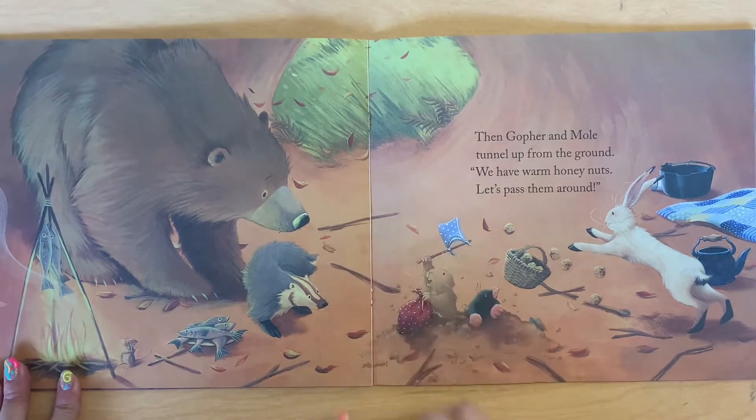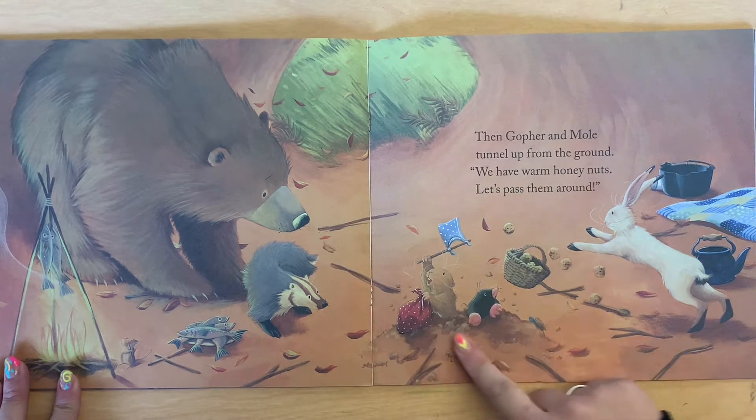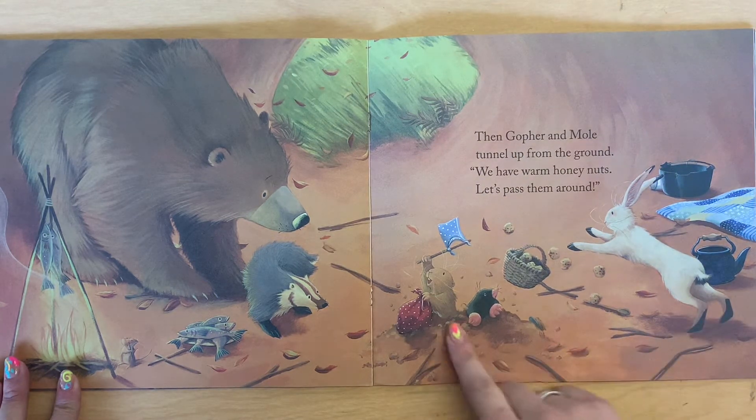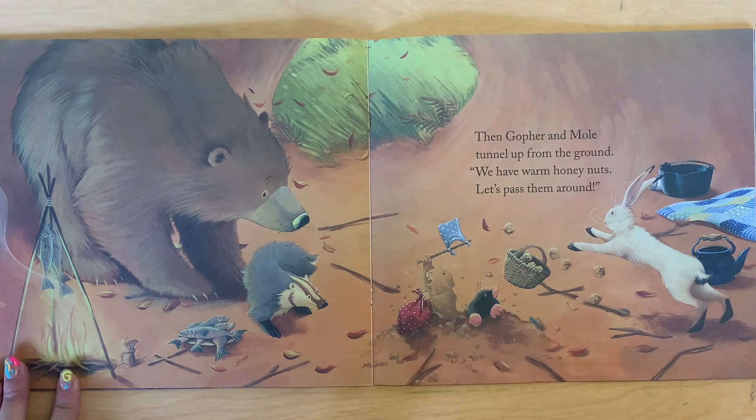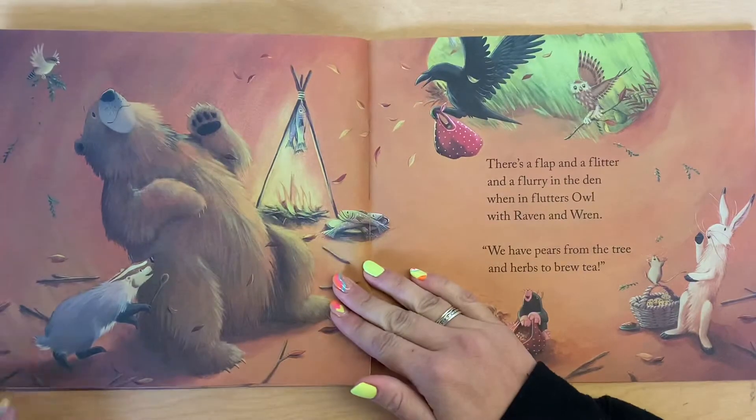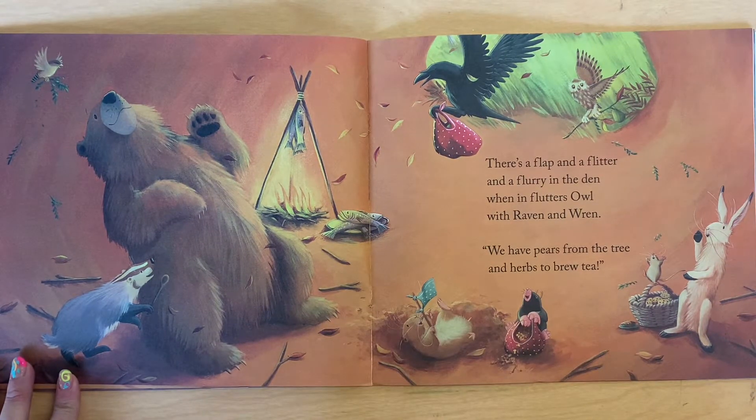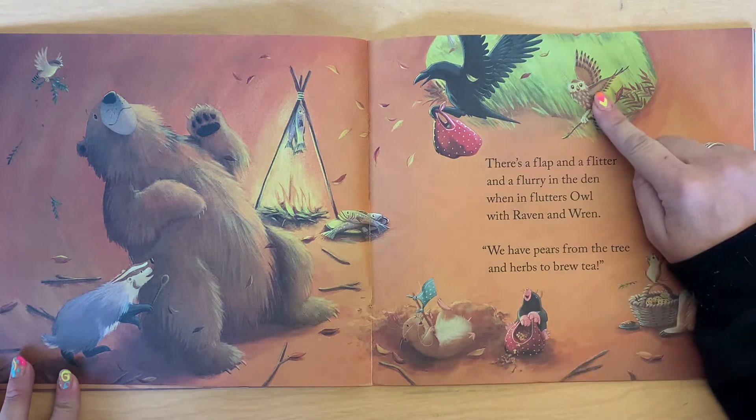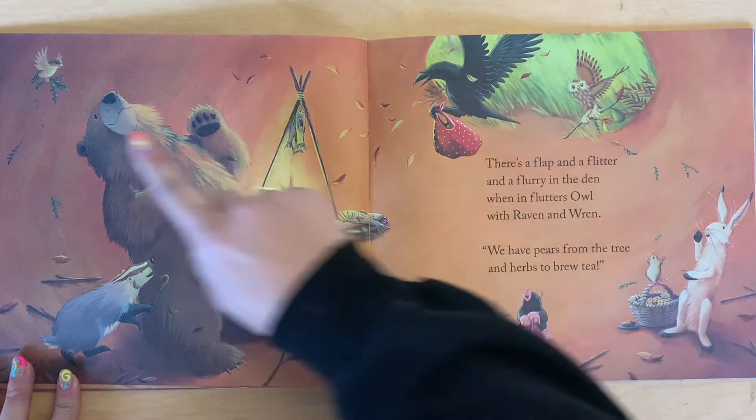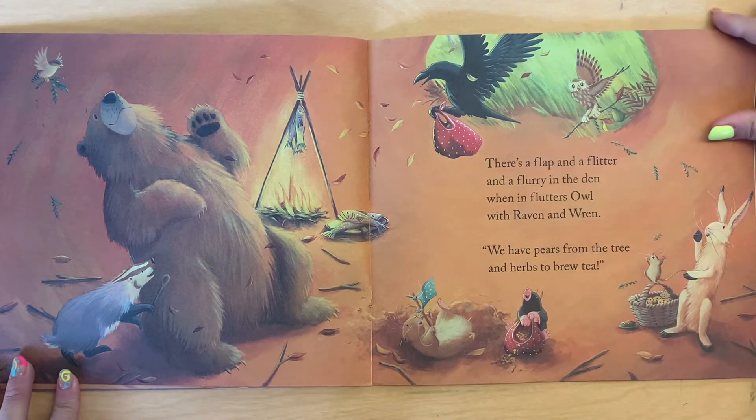Then gopher and mole tunnel up from the ground. So gophers and moles tunnel through the ground. So they tunneled under the ground into the lair. We have warm honey nuts. Let's pass them around. Then there's a flap and a flitter and a flurry in the den, when in flutters owl, raven, and wren. We have pears from the tree and herbs to brew tea.